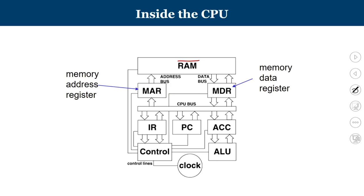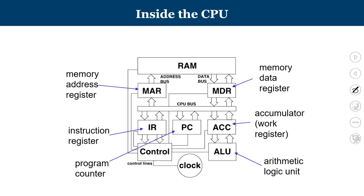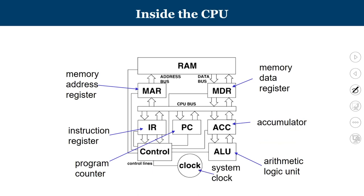Other important registers: the program counter contains the address of the next instruction to be fetched. The instruction register is connected to the control unit, and instruction decoding happens in the IR. The ALU performs all arithmetic and logical operations — operands must reach its input and the output is generated, typically appearing first in the accumulator, also known as the work register. The whole operation is controlled by a system clock.